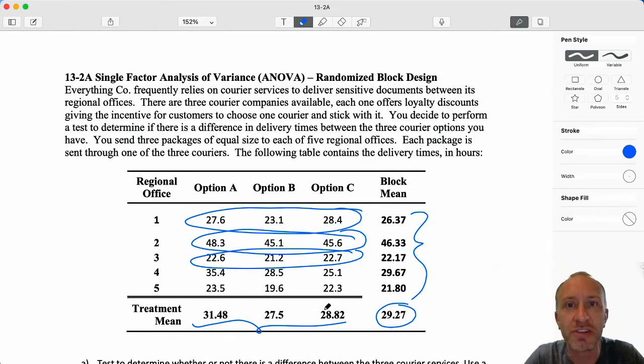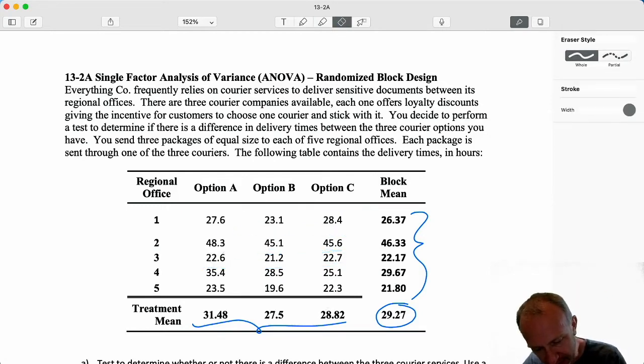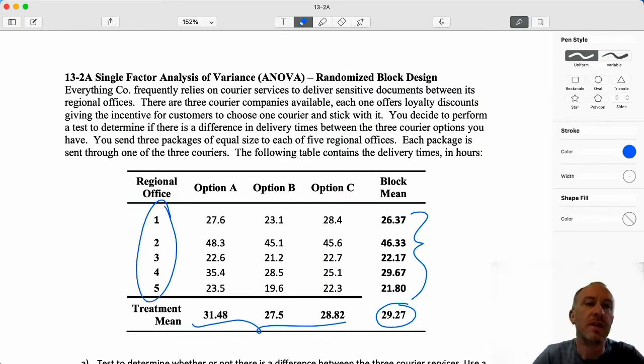Everything Company frequently relies on courier services to deliver sensitive documents between its regional offices. There are three courier companies available. Each one offers loyalty discounts, giving the incentive for customers to choose one carrier and stick with it. You decide to perform a test to determine if there are differences in delivery times between the three courier options. So we have three packages of equal size to each of the five regional offices. Each package is sent through one of the three carriers. Okay, so here's our randomized block. We have our regional offices. Those are our five experimental units. And I'm going to send three parcels to each of my regional offices, one through each of these three courier companies. Then we'll perform our test to see whether or not we have evidence to show that there's a difference in those delivery times.